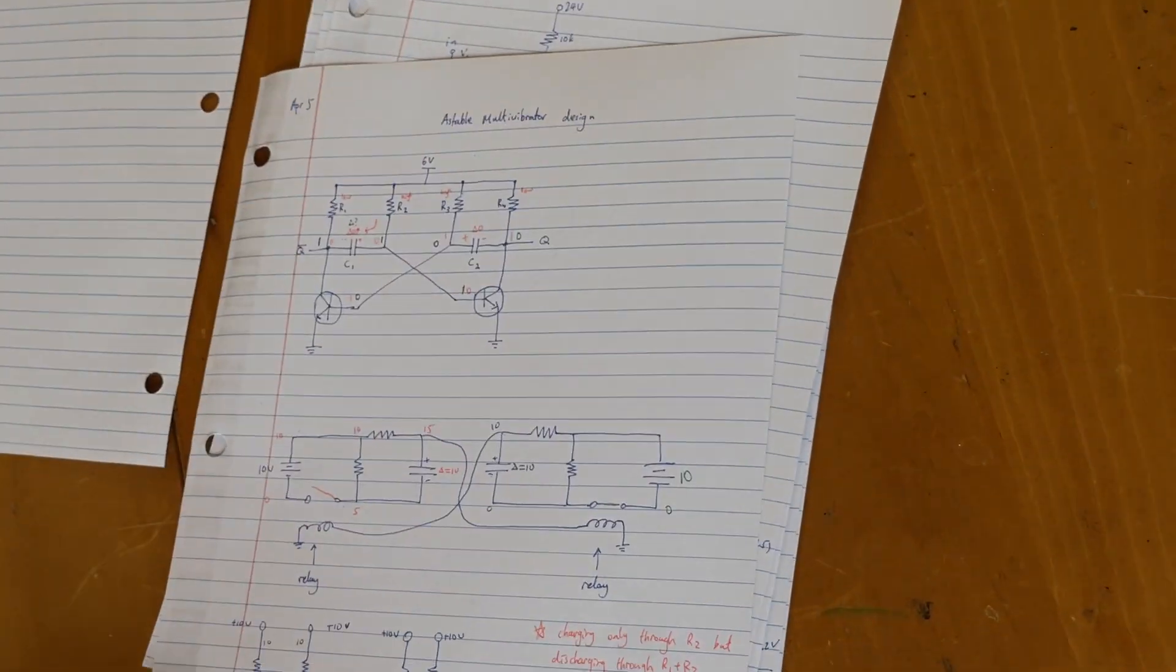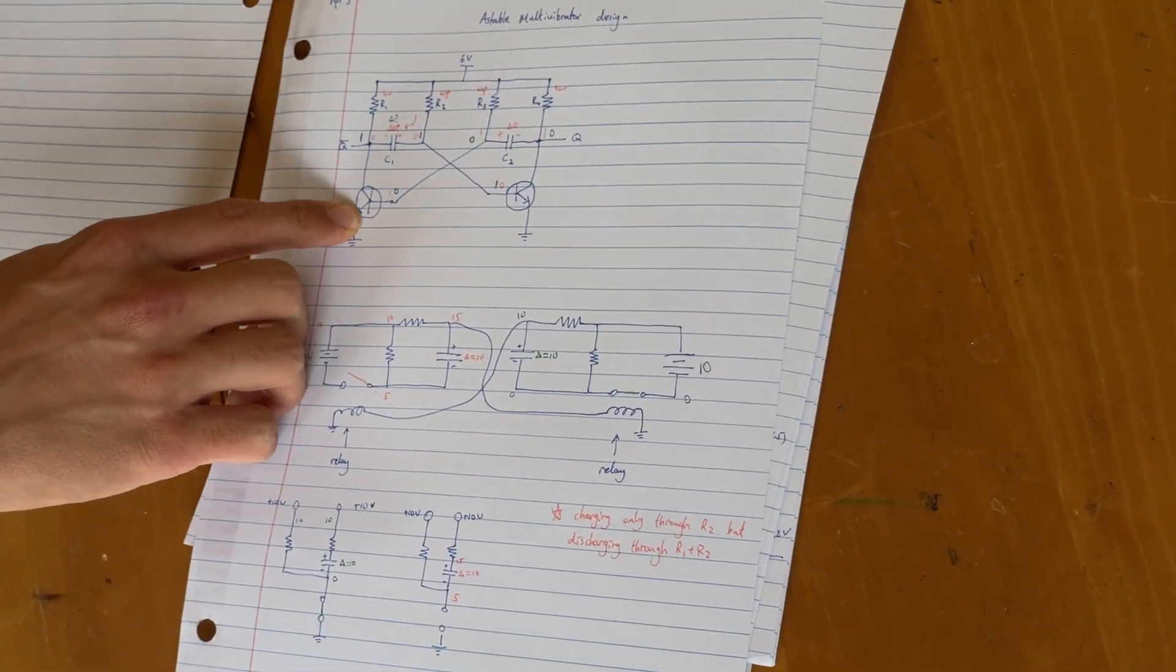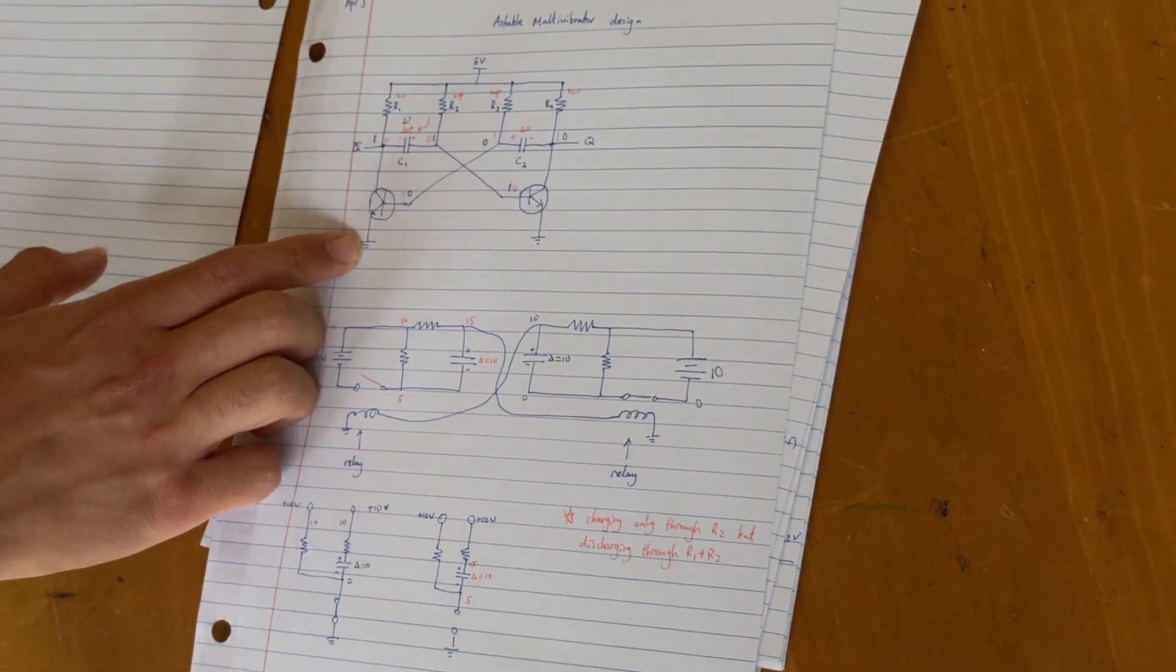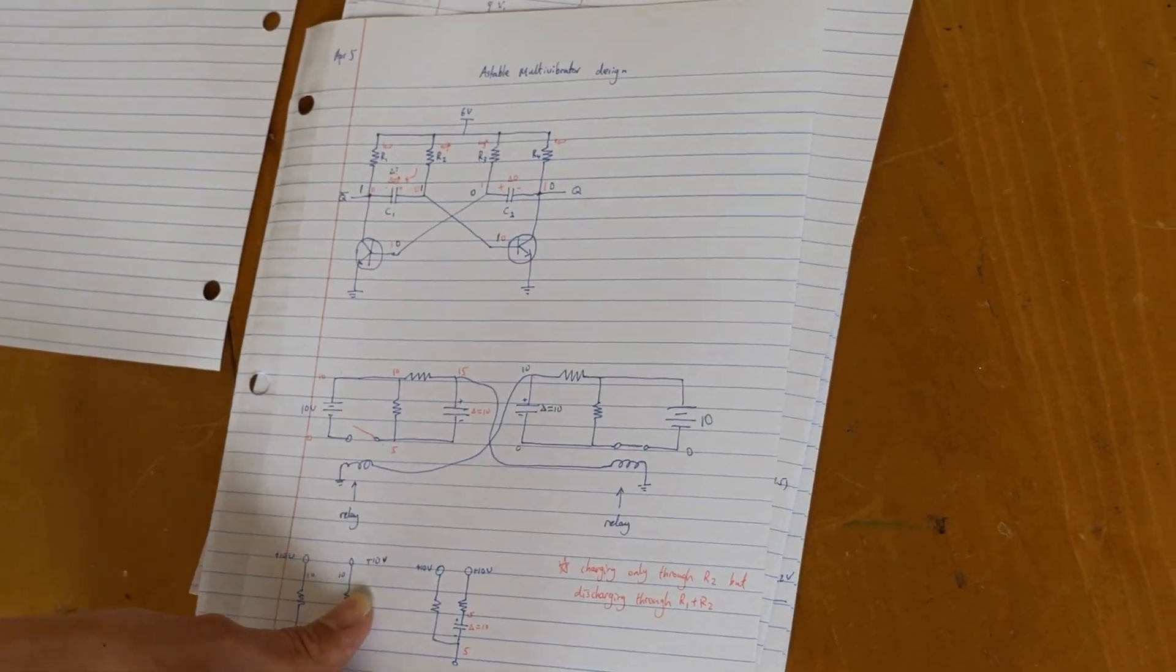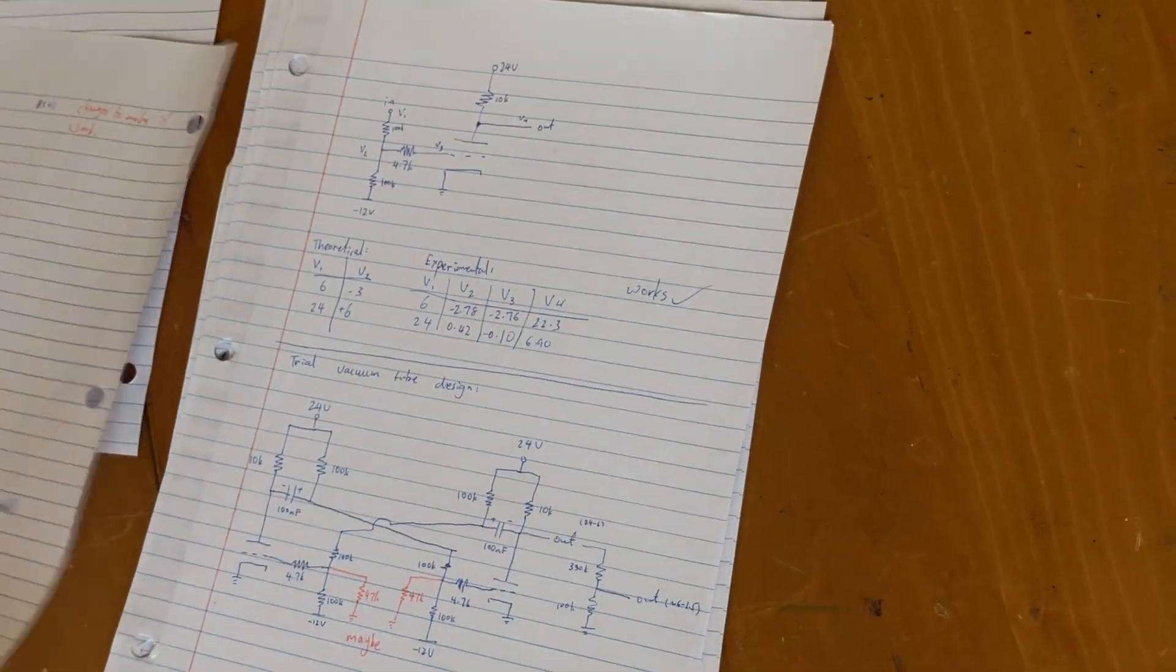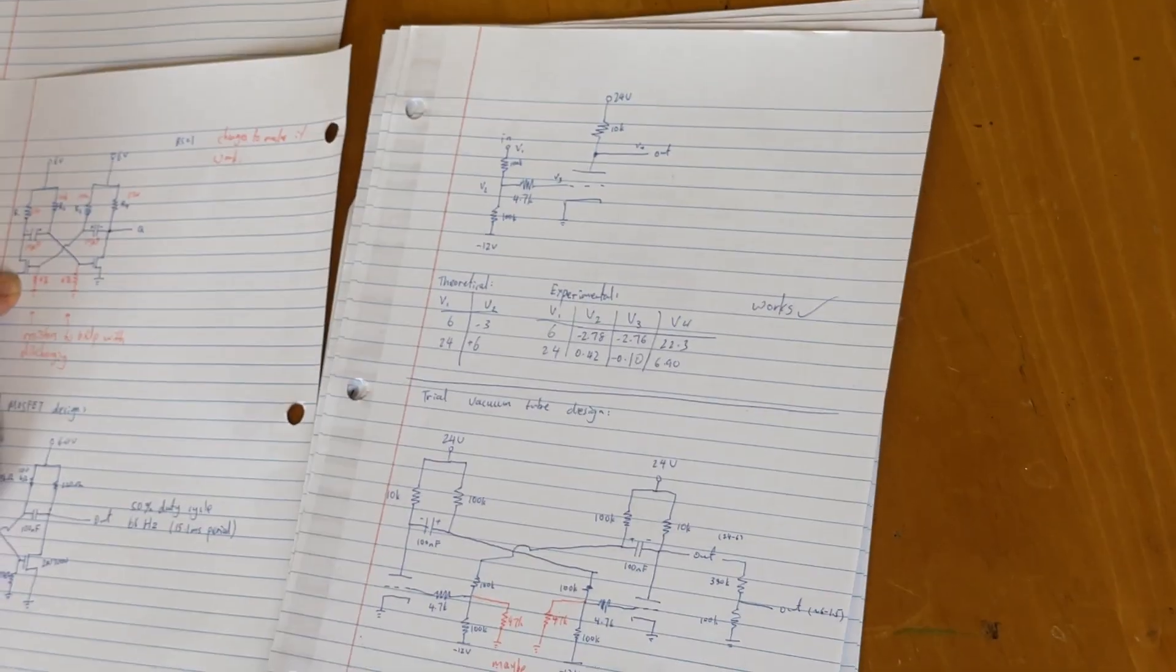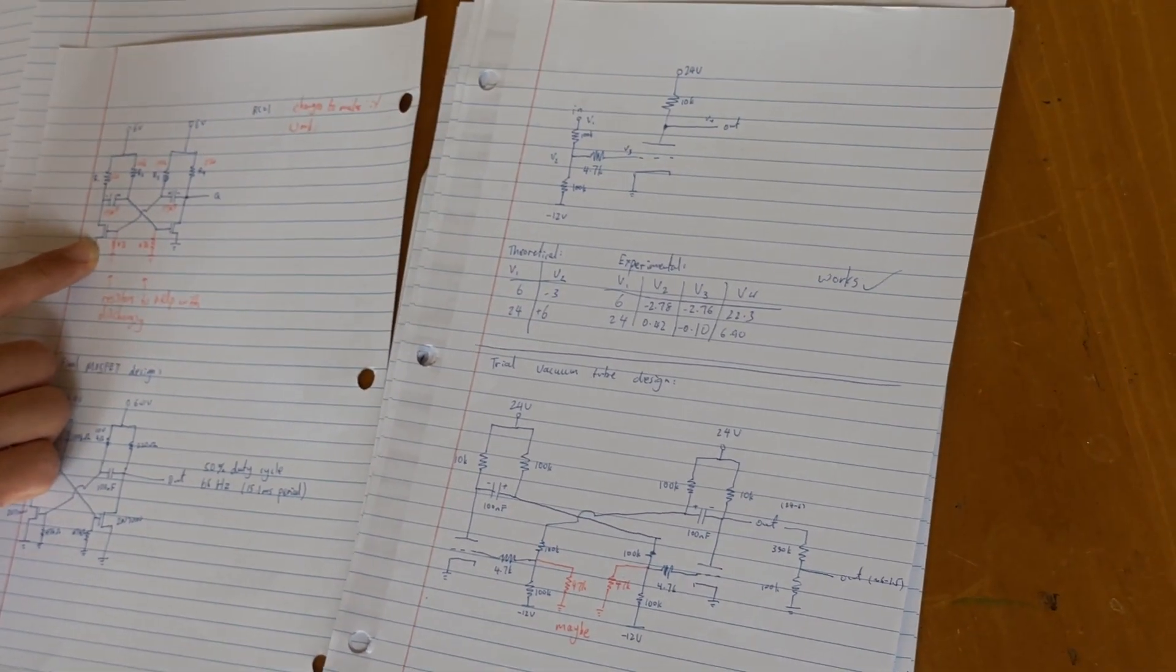But then there's a difference between BJTs and MOSFETs, because with BJT transistors, it's the current that controls the current. The current on the base controlling the current through the transistor. But with MOSFETs, it's the voltage that controls the current. So the circuit is slightly different.